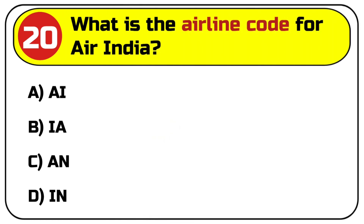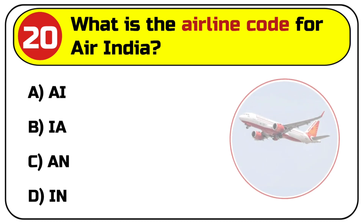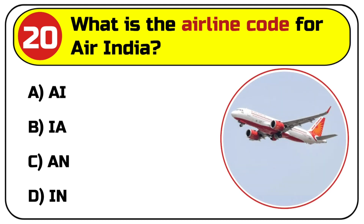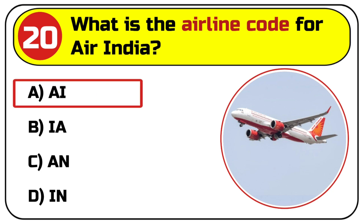Question number twenty: what is the airline code for Air India? Options are A. AI, B. IA, C. AN, D. IN. Correct answer is A. AI.